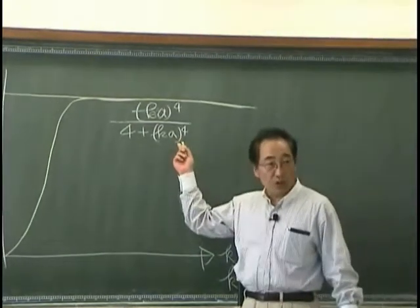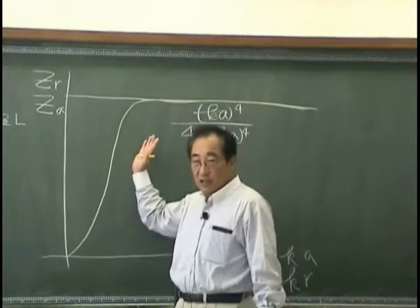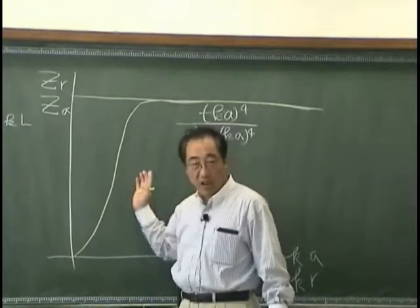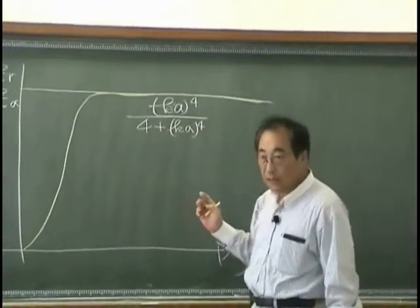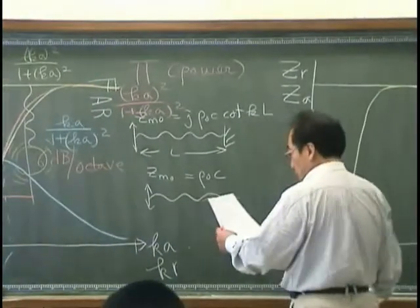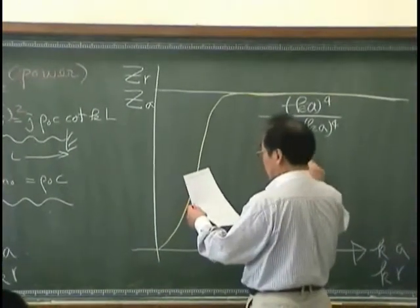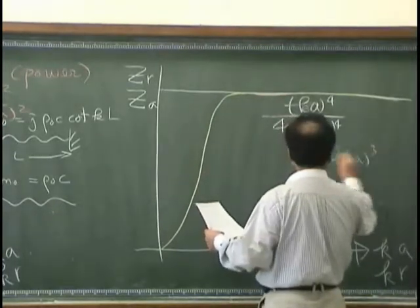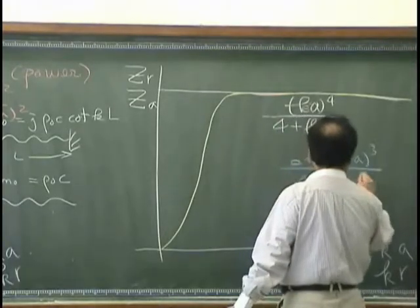But this is a function of Ka to the fourth. So the increase, the rate of increase over this range is rather stiff. For the imaginary part, it behaves like 2 Ka plus Ka to the cube divided by 4 plus Ka to the fourth.